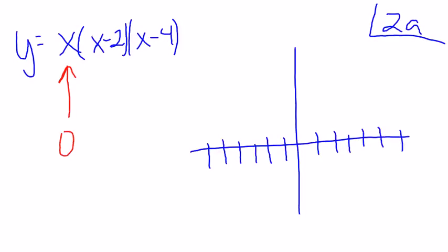x equals zero will make y zero because when I multiply it out. x equals positive two will make y equal to zero because I get some number, some number here, times two minus two which is zero, times some number here.